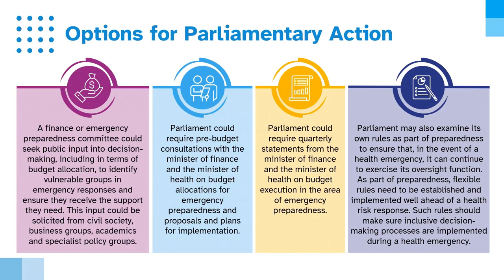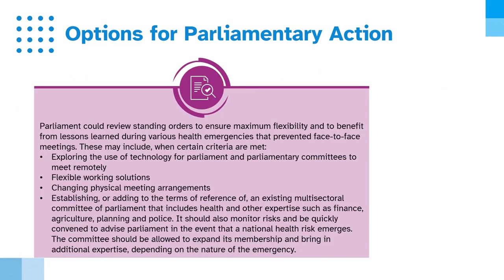Parliament may also examine its own rules as part of preparedness to ensure that, in the event of a health emergency, it can continue to exercise its oversight function. As part of preparedness, flexible rules need to be established and implemented well ahead of a health risk response. Such rules should make sure inclusive decision-making processes are implemented during a health emergency. Parliament could review standing orders to ensure maximum flexibility and to benefit from lessons learned during various health emergencies that prevented face-to-face meetings, including exploring the use of technology for parliament and parliamentary committees to meet remotely.